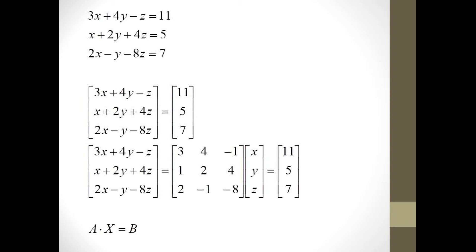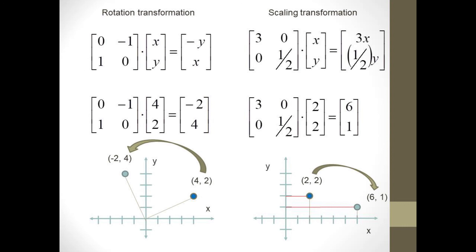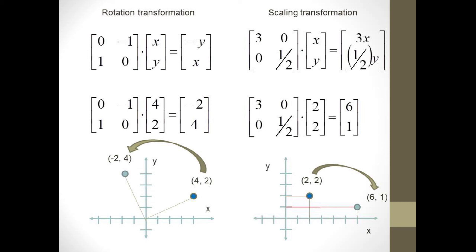In spite of this rather strange definition, matrix multiplication is actually very useful. We can break a system of equations into a matrix equation A times X equals B — one matrix containing all the linear coefficients times another containing just the variables. Matrices may also represent graphical transforms: multiplying a transformation matrix by the column vector X, Y gives a new ordered pair as the image of the transformed point. The matrix can perform a 90-degree rotation, or scale X and Y by different amounts. We can apply multiple transformations by multiplying a sequence of transformation matrices in the desired order.